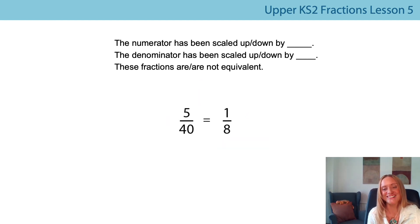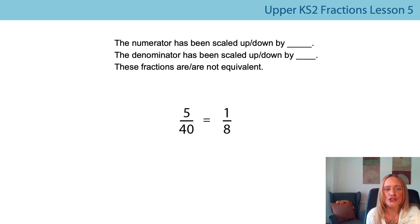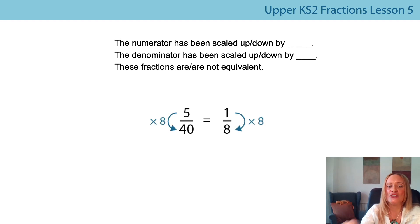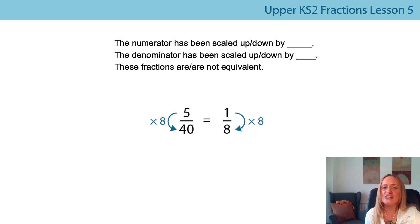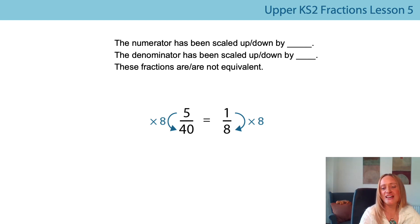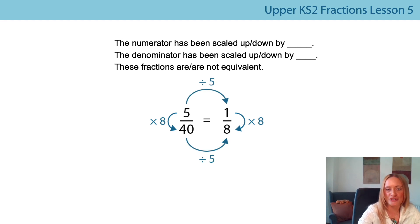Here's another one — pause and have a go. Did you use the stem sentences? The numerator has been scaled up by eight. What about the numerator and denominator horizontally — were they scaled up or down? They were scaled down, weren't they — scaled down by a factor of five. So we had to divide by five, and we spoke about that inverse relationship yesterday.